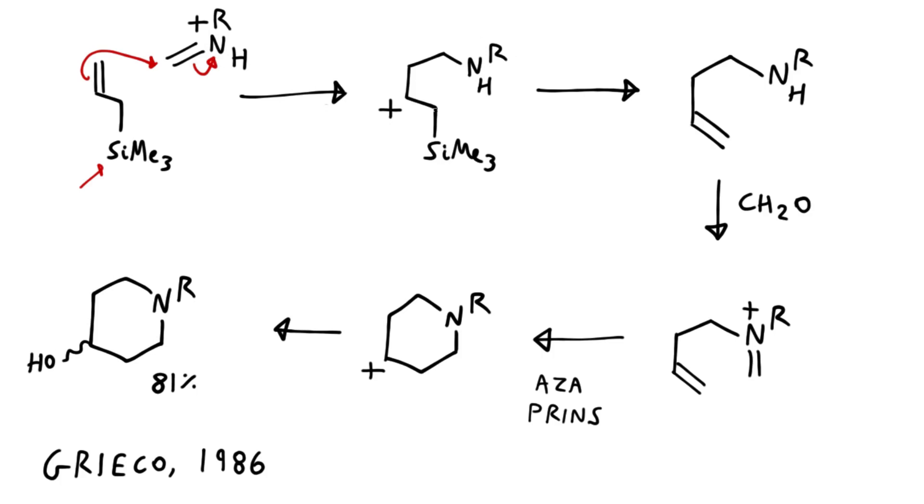This affords a beta-silyl-stabilized carbocation product, and then of course some molecule of solvent comes along, picks off the silicon, and regenerates our double bond.